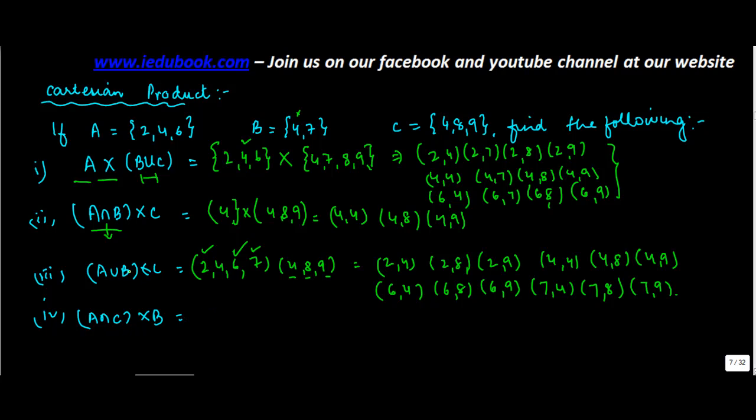A intersection C cross B. Now what is common in A and C? 2, no. 4, yes. 6, no. So A intersection C is {4} and B is equal to {4, 7}. Make pairs of 4 with the other elements in B. 4 with 4, 4 with 7.